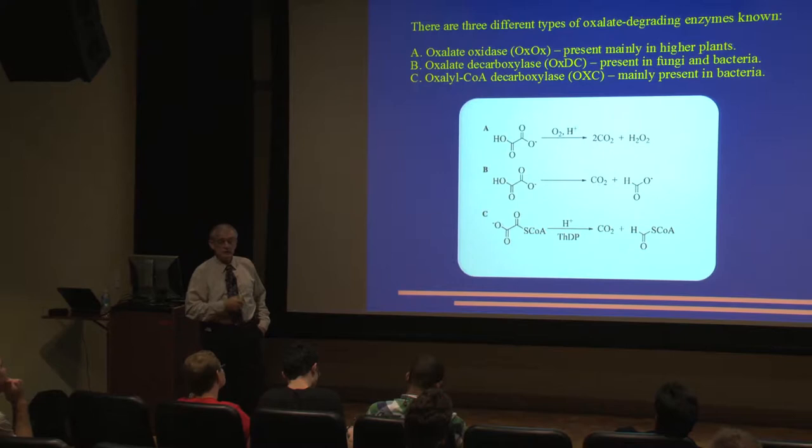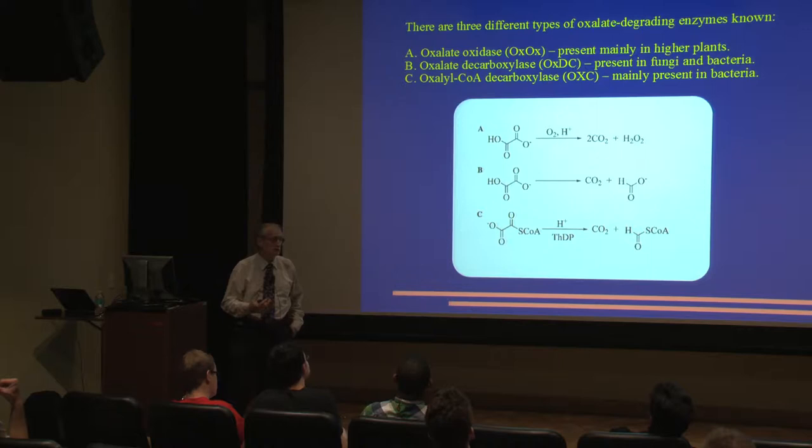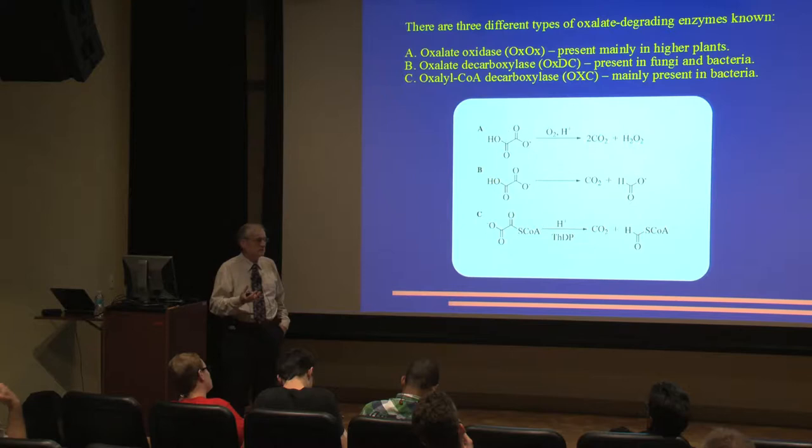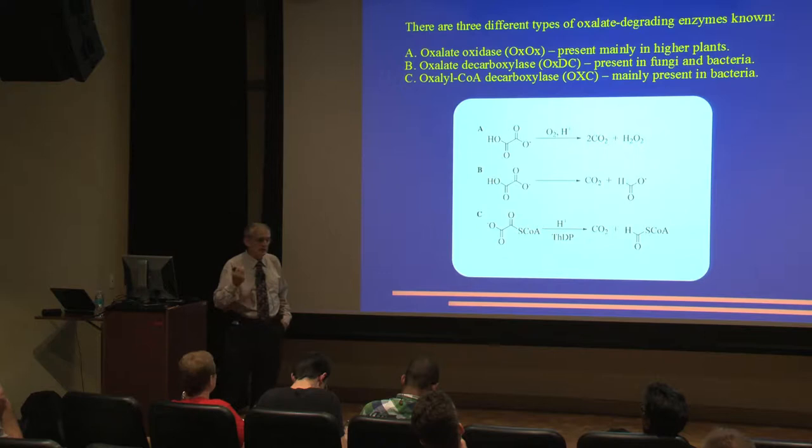Oxalate decarboxylase is present in fungi and bacteria - that's the enzyme I'm studying. Oxalicoid decarboxylase is also in bacteria. Some of us have this in our gut. It's a gut bacterium that breaks down oxalate. It's a helper bacterium that lives on oxalate, and people who have it typically don't get kidney stones because they don't absorb the oxalate.